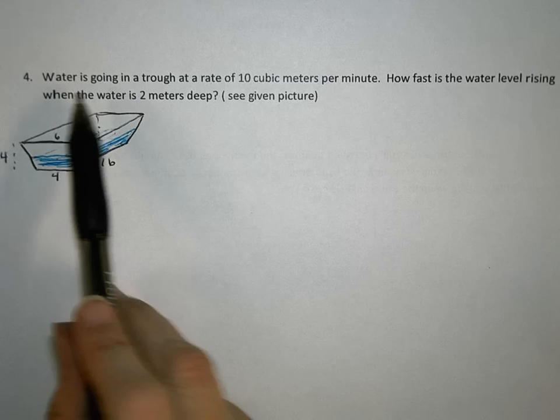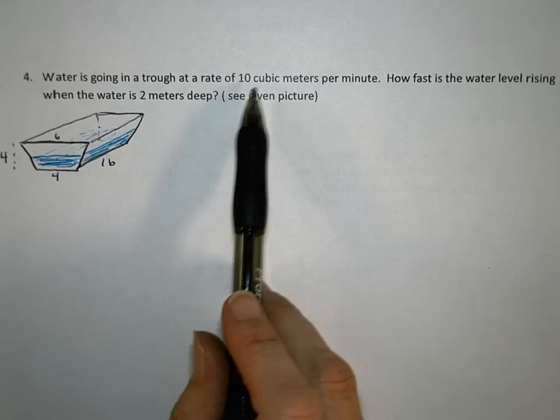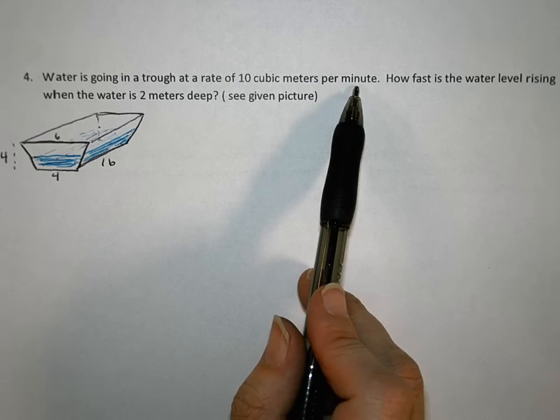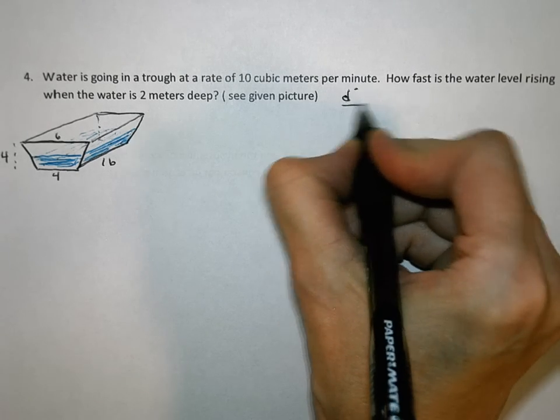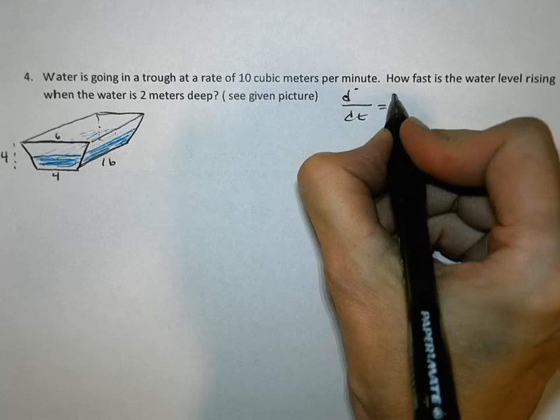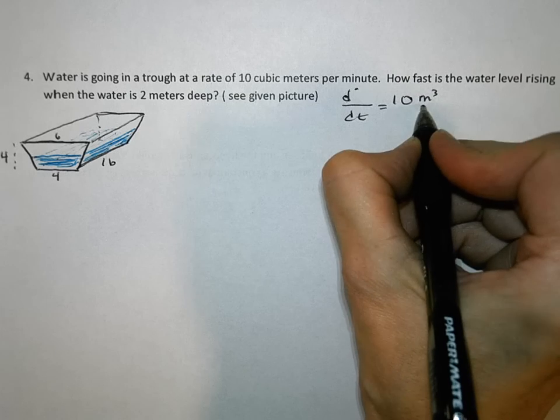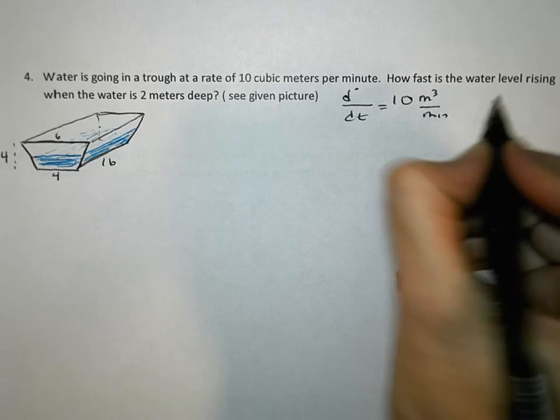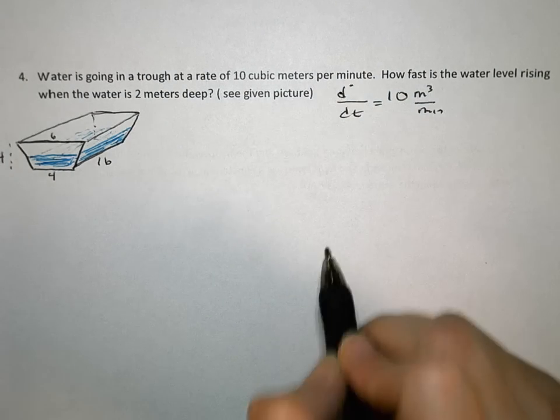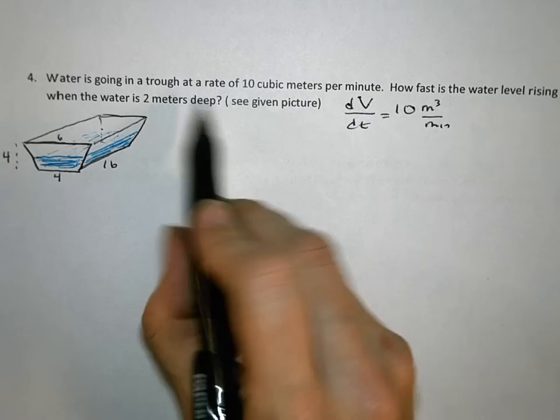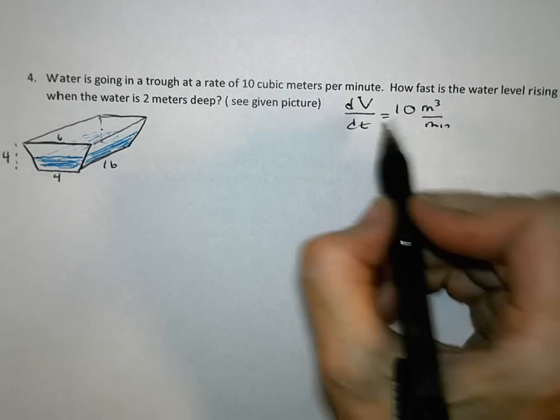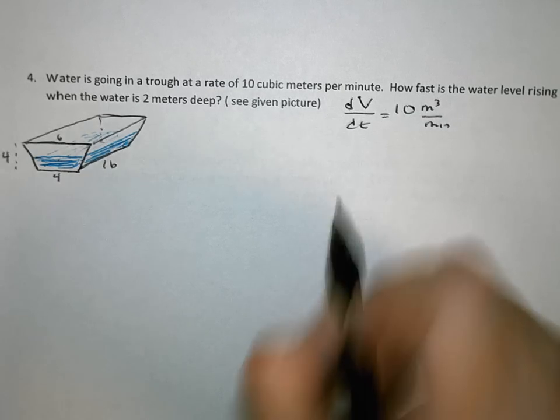This problem says water is going into a trough at a rate of 10 cubic meters per minute. Let's figure out what that is. That says d something dt is equal to 10 cubic meters per minute. Since it's cubic meters, I can tell they're telling me about the volume of something, and that makes sense. The water is going in 10 cubic meters per minute, so they've given us dV/dt.